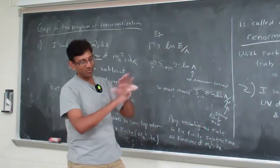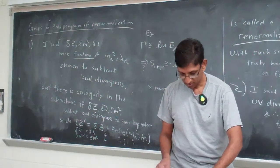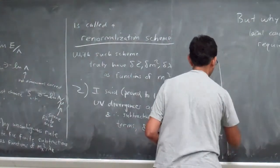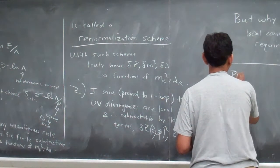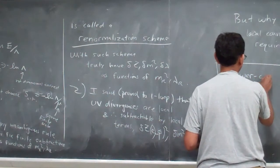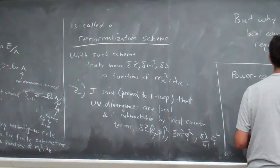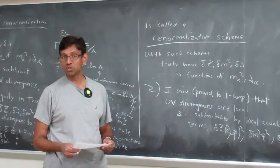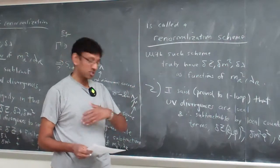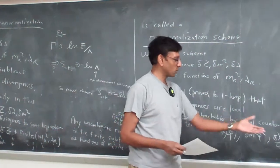This is often called power counting — power counting UV divergences. The point is to understand, in quite some generality, what kind of ultraviolet divergences you could conceivably encounter. One thing we know, and it's an incredible insight, is that the divergences are local. But now we are asking: okay, they're local, but which local class?